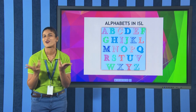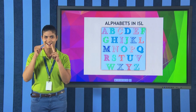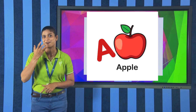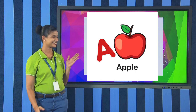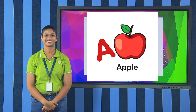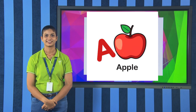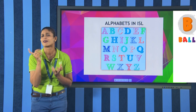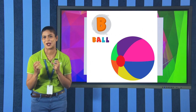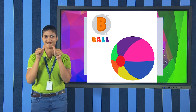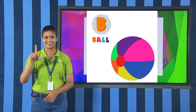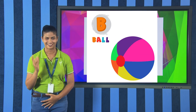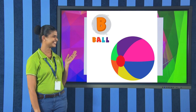Word starting with A: apple — A, P, P, L, E — sign for apple. Next, letter B — B, A, L, L — ball. This is the sign for ball.